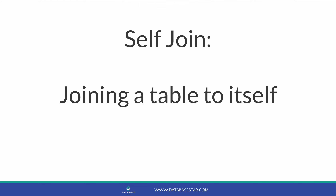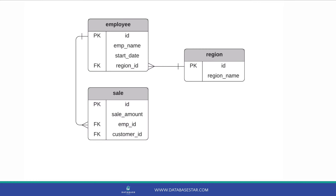A self-join is the practice of joining a table to itself. When you write queries that select data from two or more tables, you use joins to connect them on common fields. I've got another video that explains the concept of a join if you wanted to go more in depth on that.